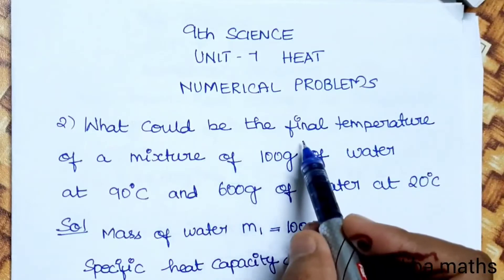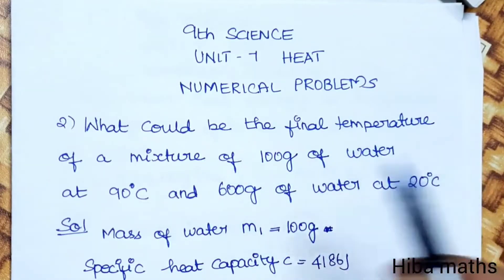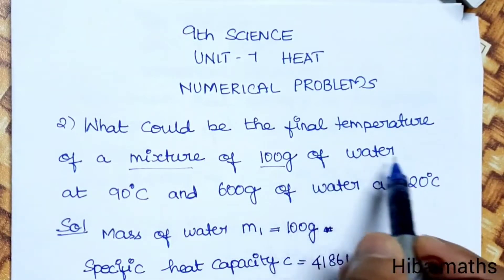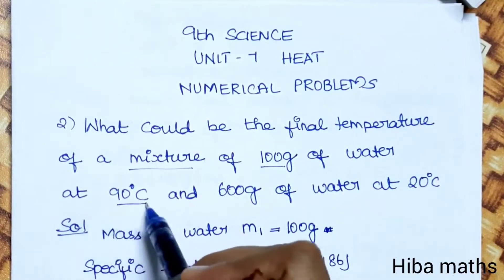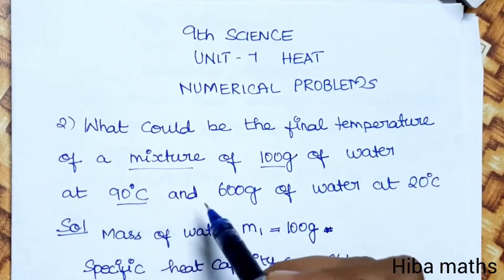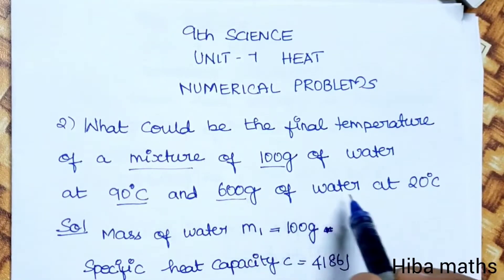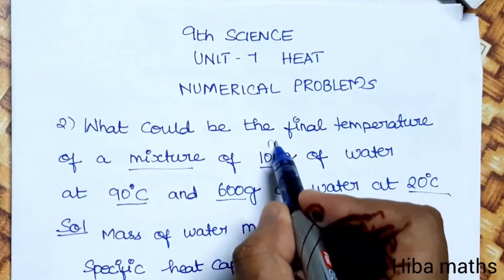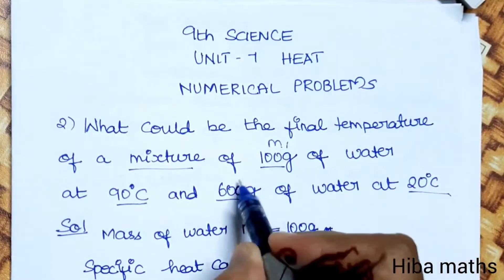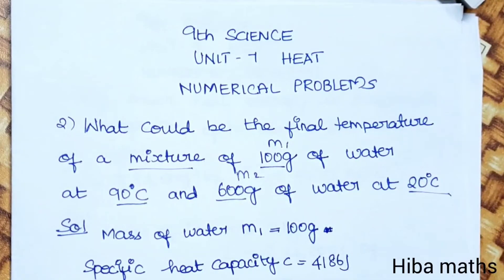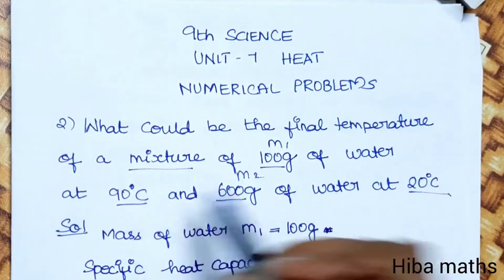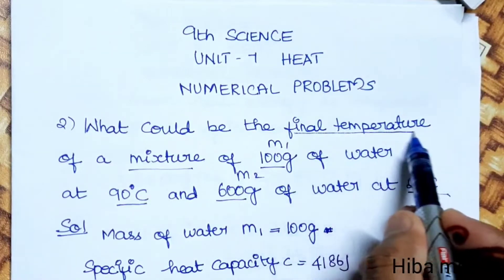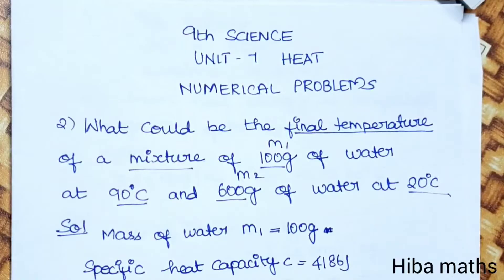Second question: what would be the final temperature of a mixture of 100 grams of water at 90 degrees Celsius and 600 grams of water at 20 degrees Celsius? So we have mass 1 as 100 grams, mass 2 as 600 grams, and we need to find the final temperature.